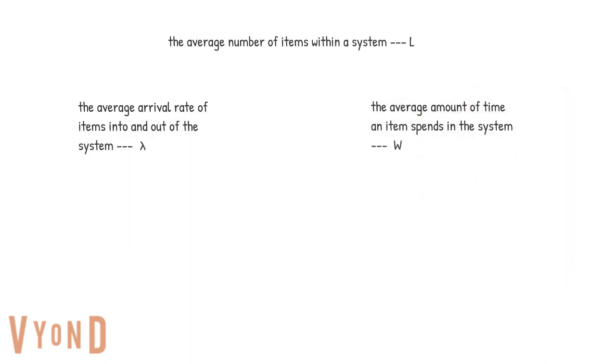Little's Law states that the average number of items within a system equals the average arrival rate of items into and out of the system, multiplied by the average amount of time an item spends in the system. The Little's Law formula is L equals lambda times W. In other words, the average number of items in a queuing system, denoted L, equals the average arrival rate lambda multiplied by the average waiting time W.